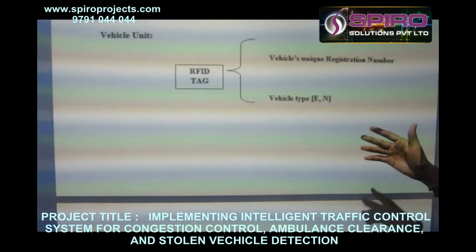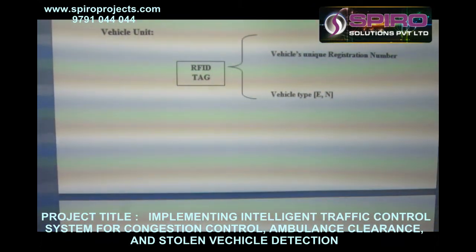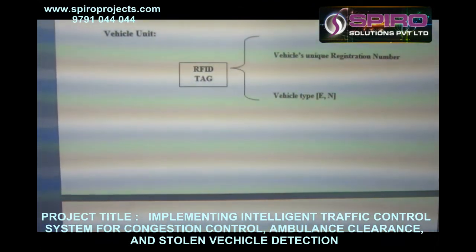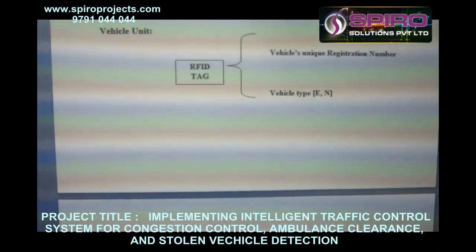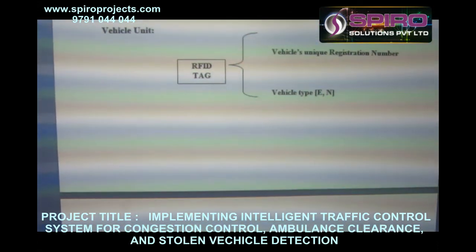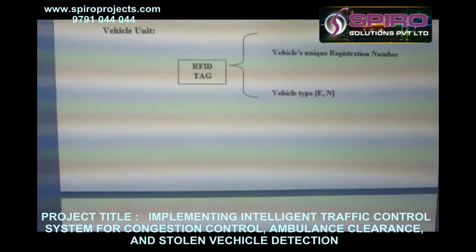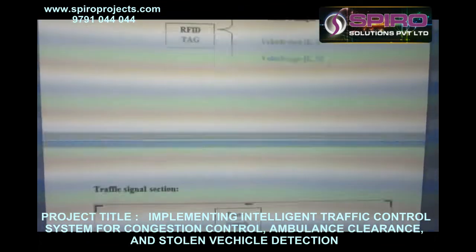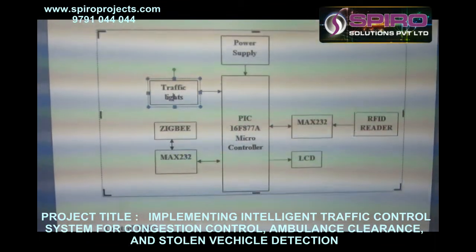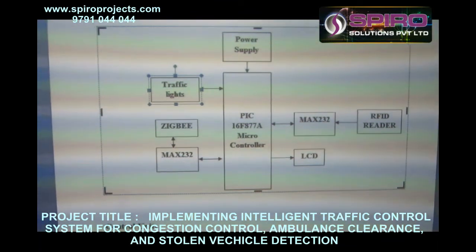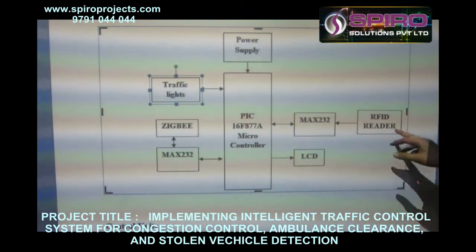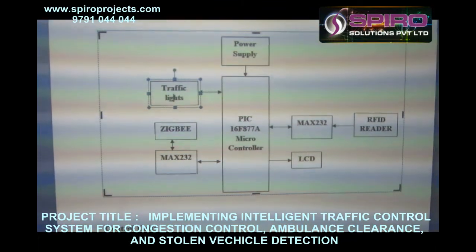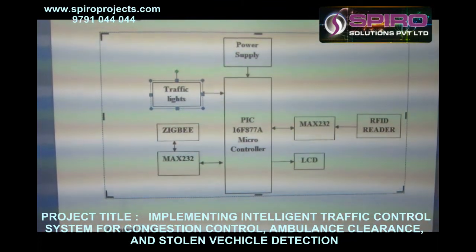This is our vehicle unit. The vehicle unit consists of an RFID tag. This RFID tag contains two things: one is the vehicle unique registration number, and another one is the vehicle type — whether the vehicle is an ambulance or a consumer vehicle. Whenever vehicles move across this system, the RFID reader reads the vehicle unit number and the vehicle type.